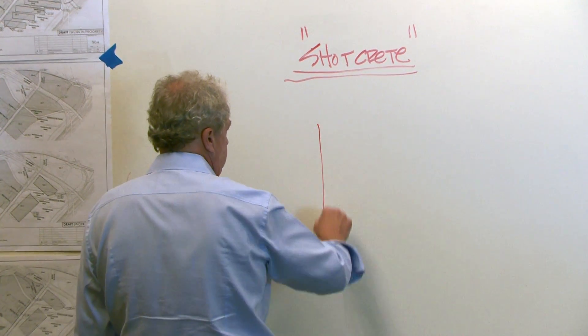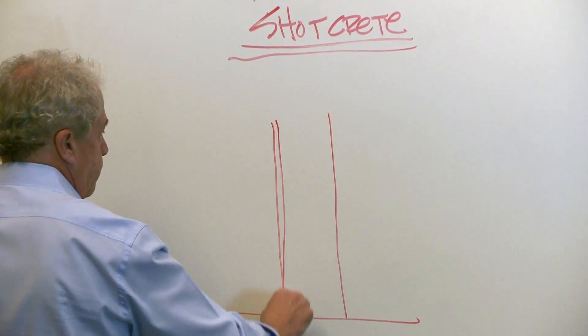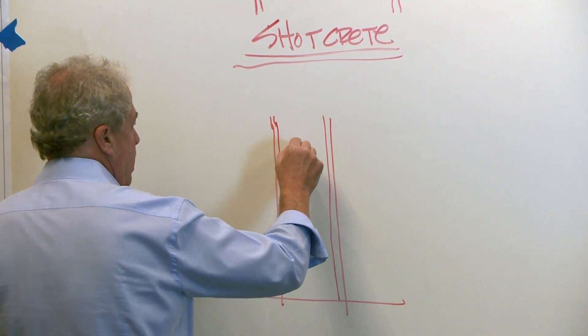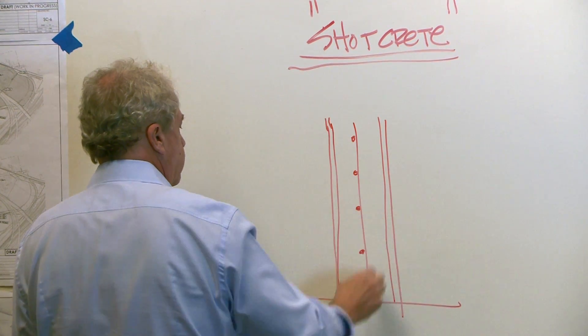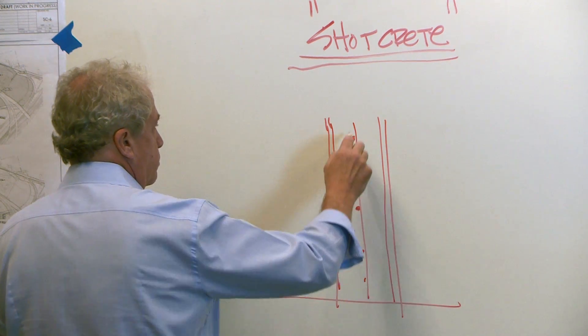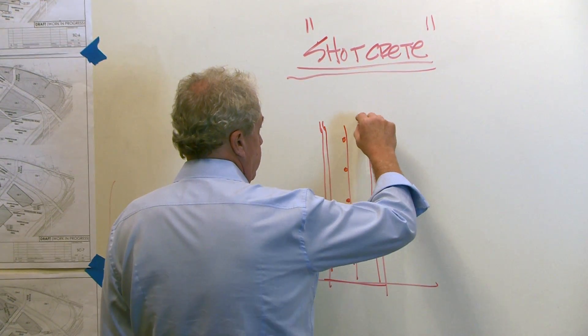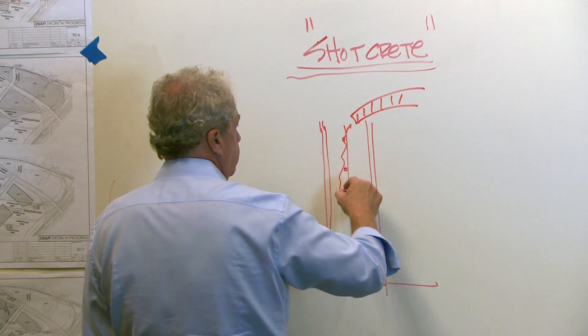So traditionally, concrete walls are formed up. There's a form inside which are steel bars reinforcing to enable forming the concrete while it's wet. And the concrete is placed inside,